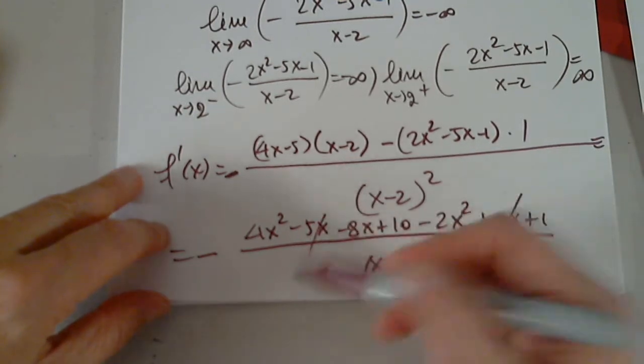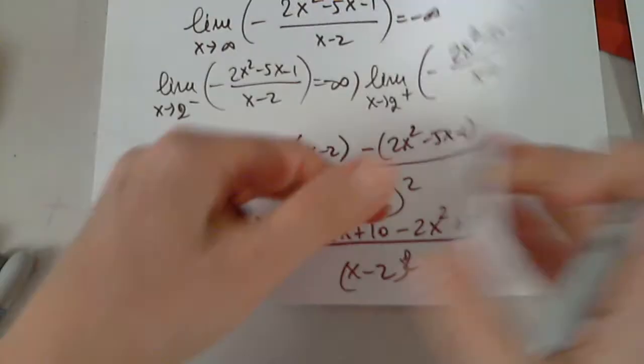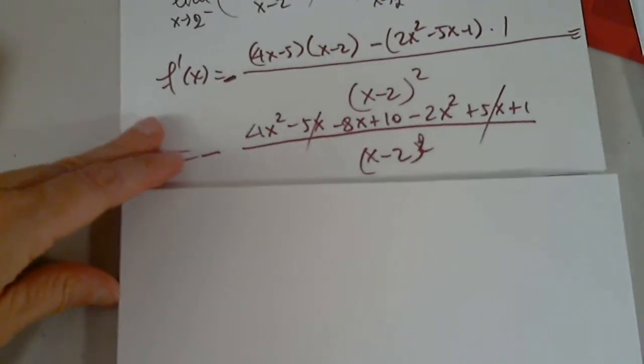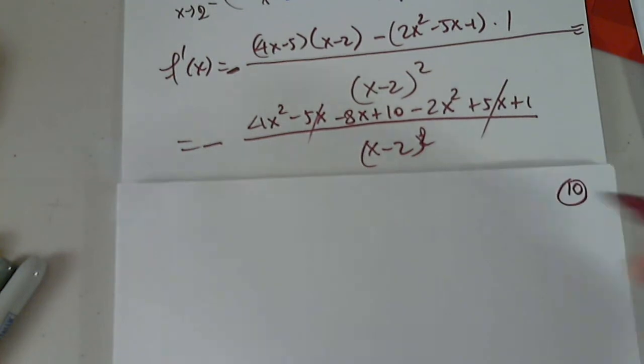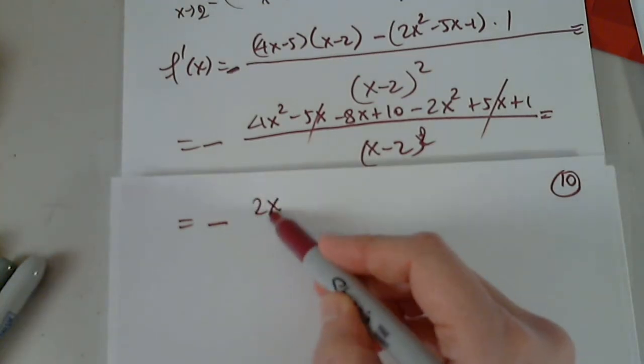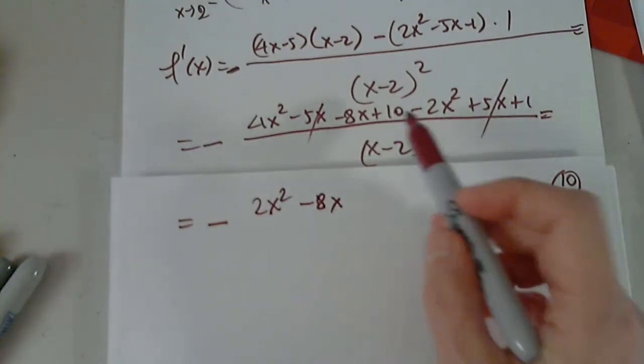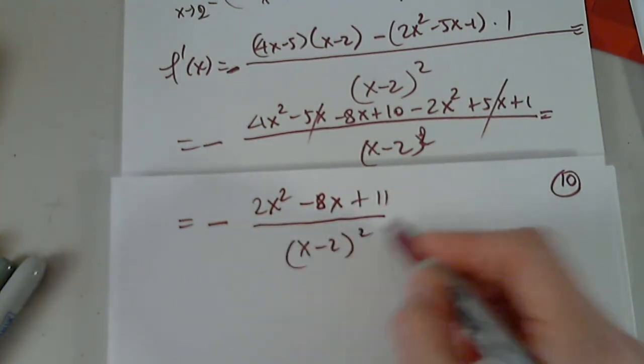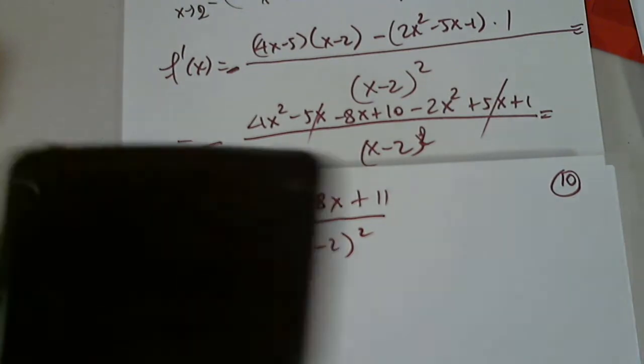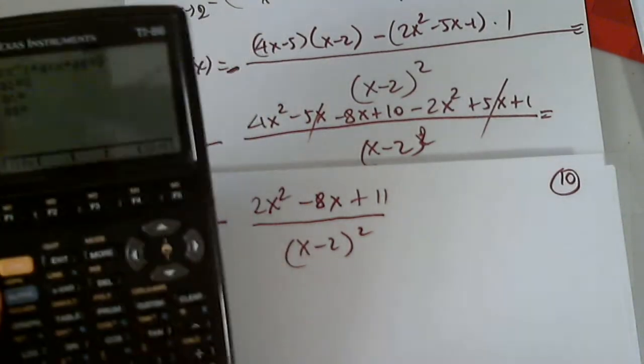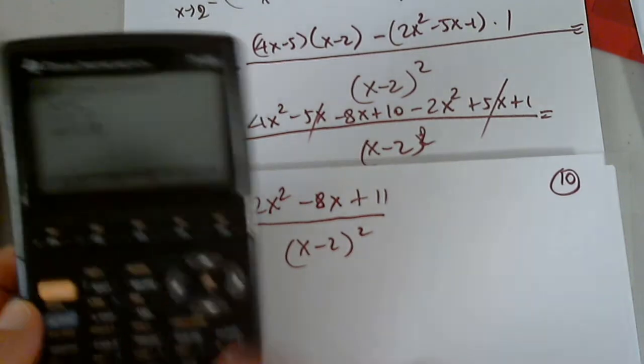Negative outside. I cannot simplify in any way, shape or form. So 4x squared minus 5x minus 8x plus 10 minus 2x squared plus 5x plus 1. At least something goes away. So minus stays in front for now. The negative outside. 4x squared minus 2x squared is 2x squared. I have a negative 8x and I have a positive 11. Where are you, my calculator, when I say this is equal to 0? I have 2, negative 8, and 11. Solve.